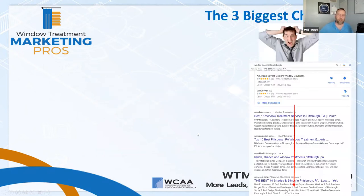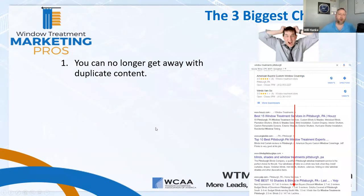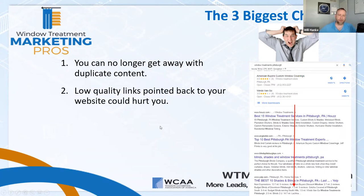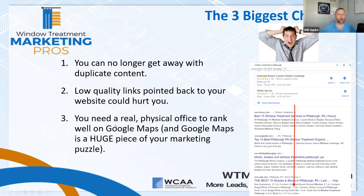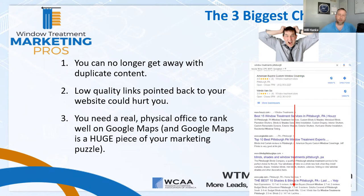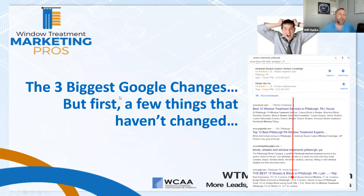Let's talk about the three biggest changes that have happened with Google. Number one: you can no longer get away with duplicate content. Number two: low-quality links pointing back to your website can hurt you. Number three: you need a real physical office in order to rank well in the Google Maps area. We're seeing that Google Maps is outperforming organic search in some cases. 60 to 70% of all users searching are now on mobile and making decisions from the Google Three Pack — so if your business isn't listed and optimized there, that's a big miss.